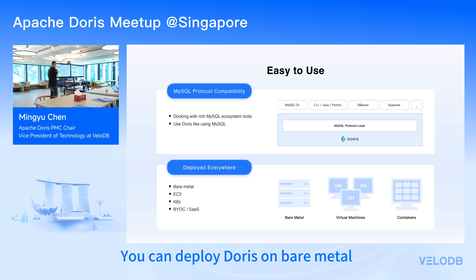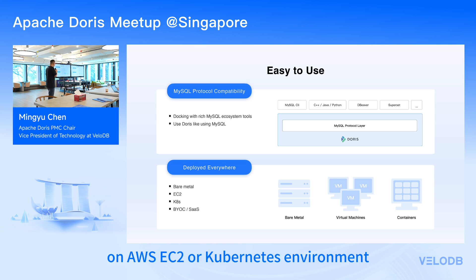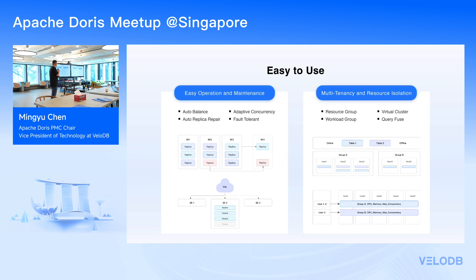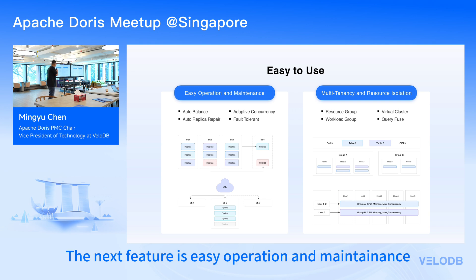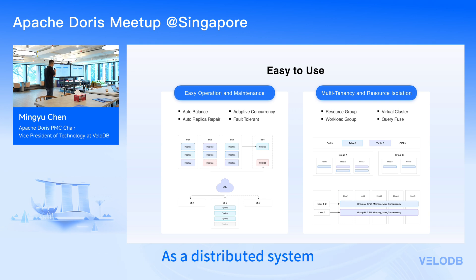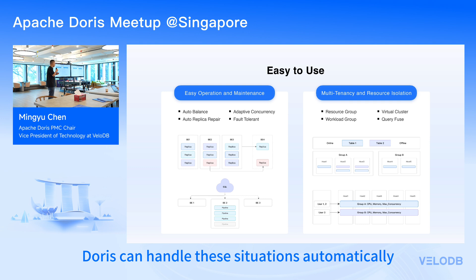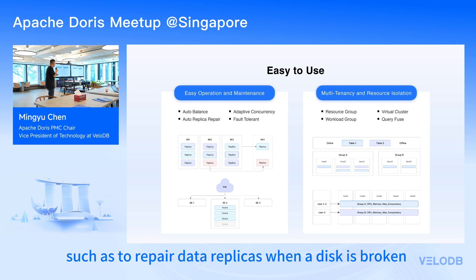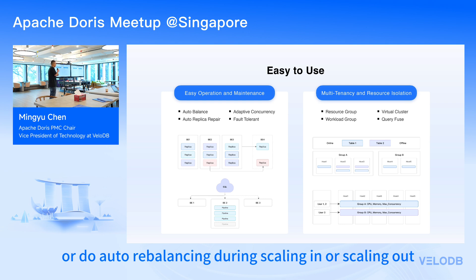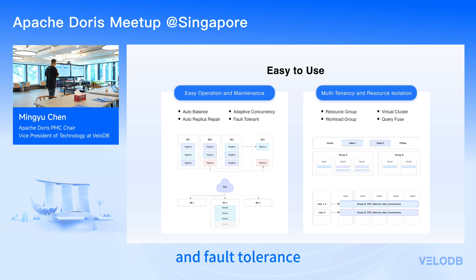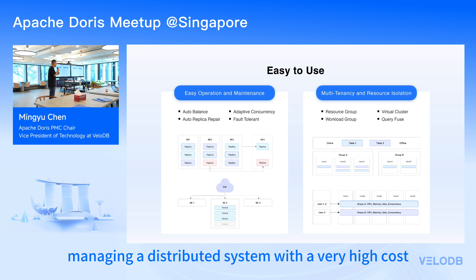You can deploy Doris everywhere — on bare metal, AWS EC2, Kubernetes environments, or find commercial products as VeloDB or SaaS. As a distributed system, Doris handles situations like node failure and disk breakage automatically — repairing data replicas when a disk is broken, and auto-rebalancing during scale-in or scale-out. Doris also supports adaptive concurrency control and fault tolerance, so you don't need to worry about managing a distributed system at high cost.